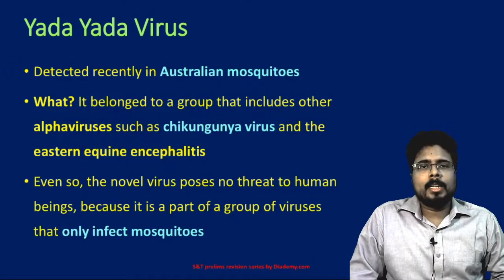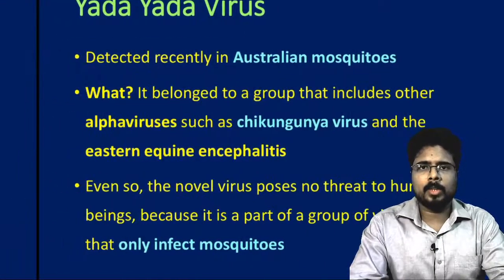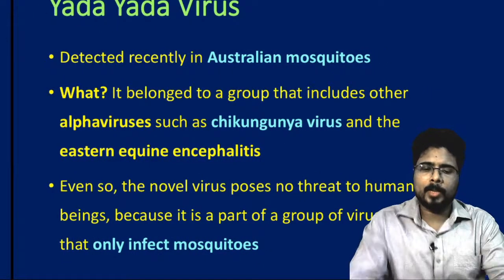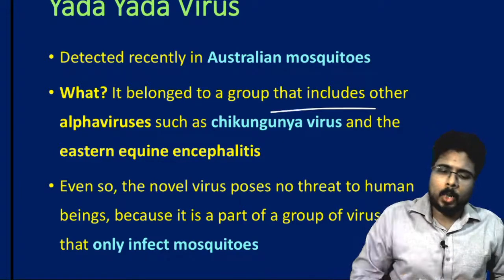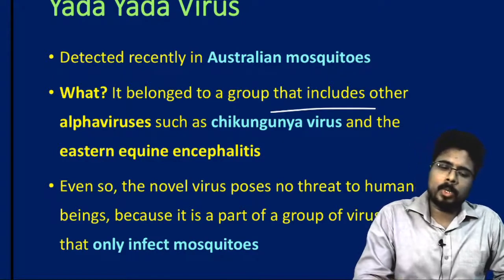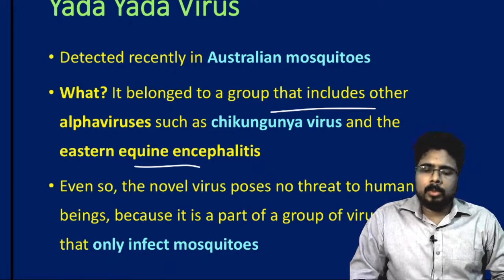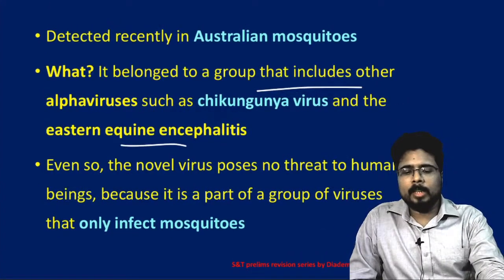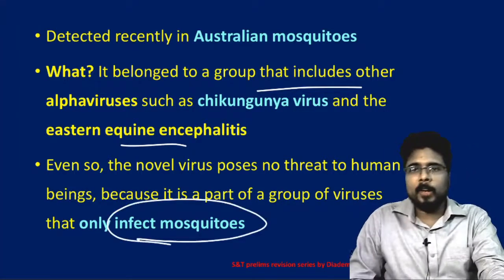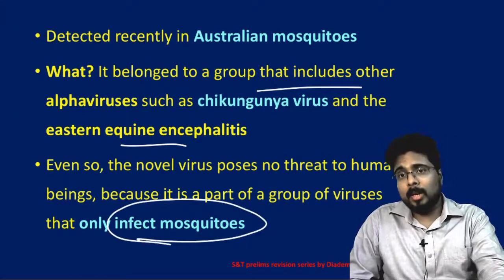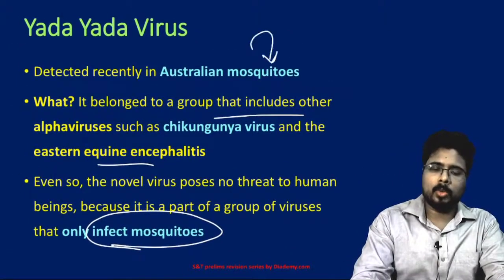Next, the yada yada virus. This was recently discovered in Australia. It belongs to a group that includes other alpha viruses such as chikungunya and eastern equine encephalitis. The novel virus poses no current threat to human beings because it only infects mosquitoes, but we don't know the actual consequences of what could happen later. The yada yada virus was recently found in mosquitoes in Australia.